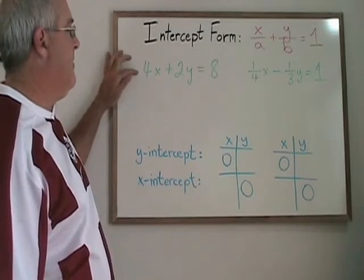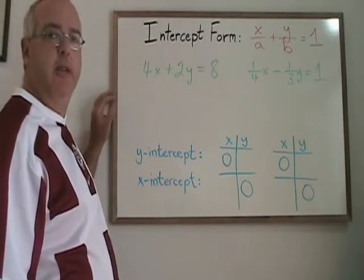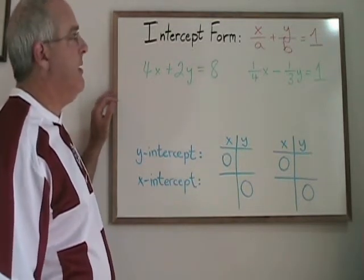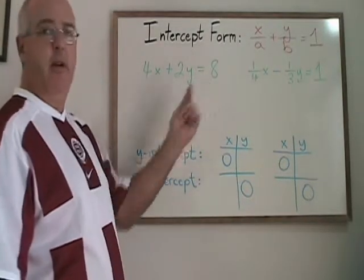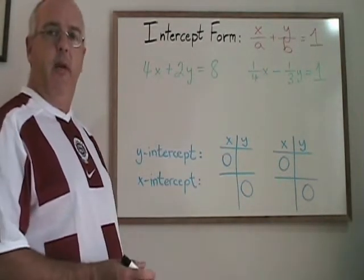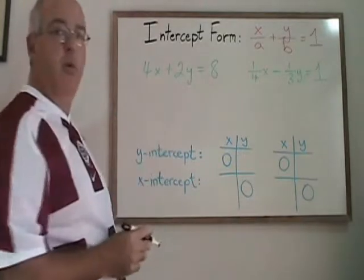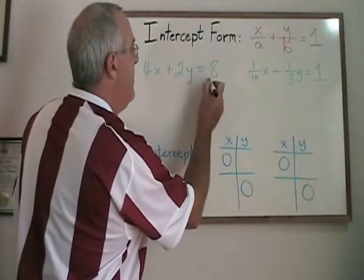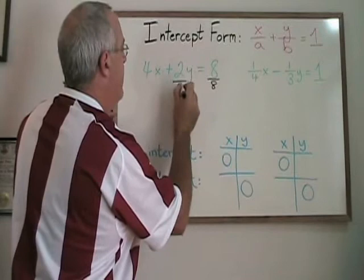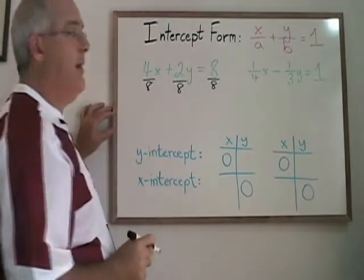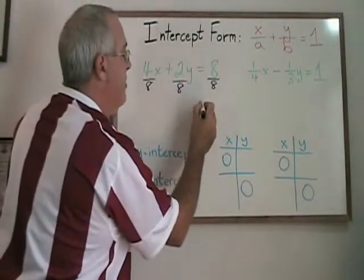In this first equation, I have 4x plus 2y equals 8. This is not in intercept form because this is not a 1. The important thing we have to do is turn that 8 into a 1, and we do that by dividing everything in the equation by 8. 8 over 8, of course, is equal to 1.